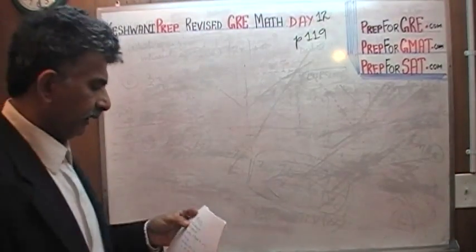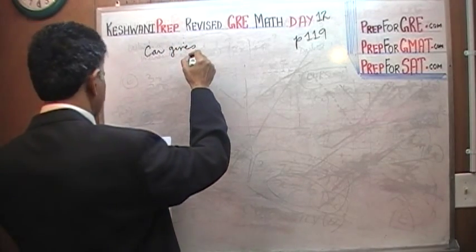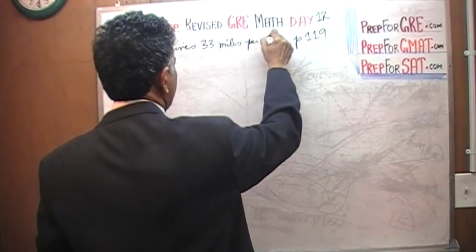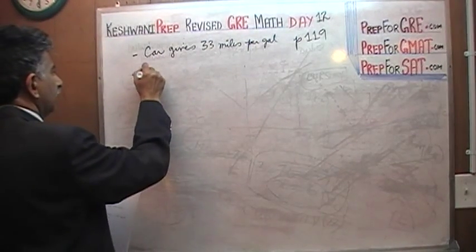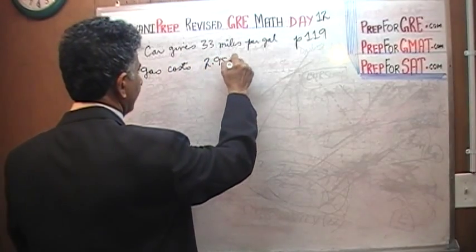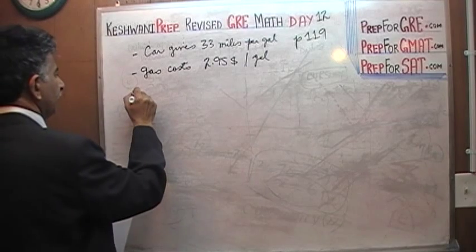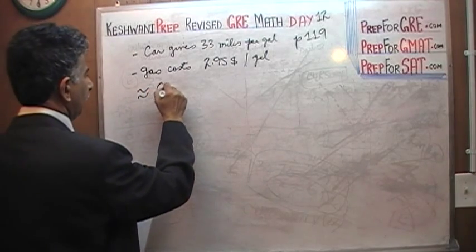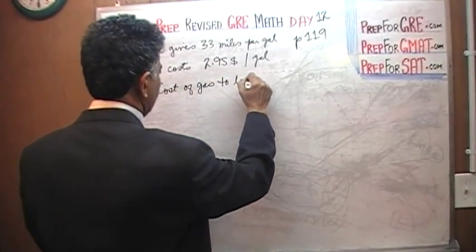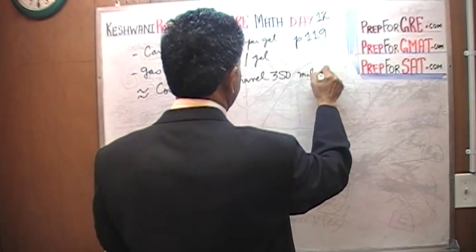We are told that we have a car that gives 33 miles per gallon. We are also told that the gas costs $2.95 per gallon. The question simply is: what is the approximate cost of gasoline to travel 305 miles?